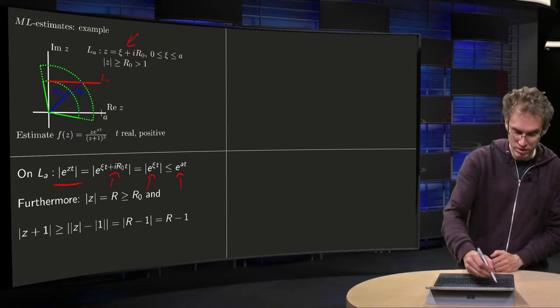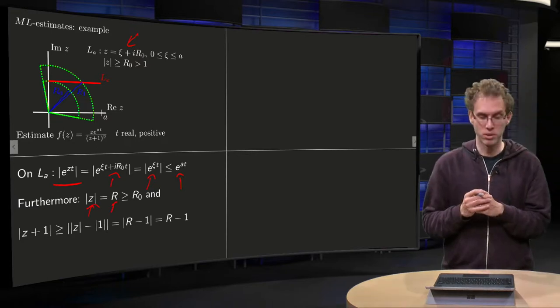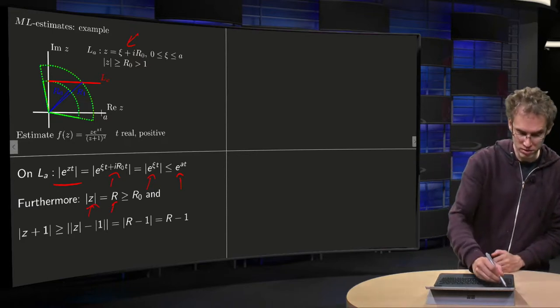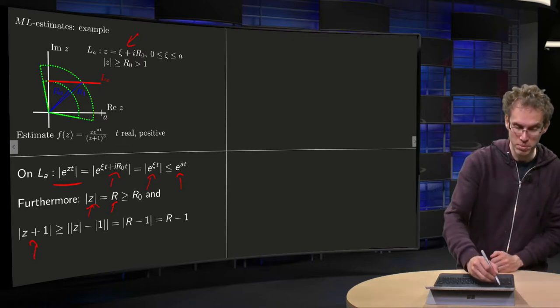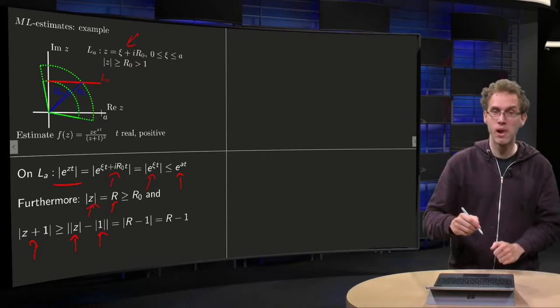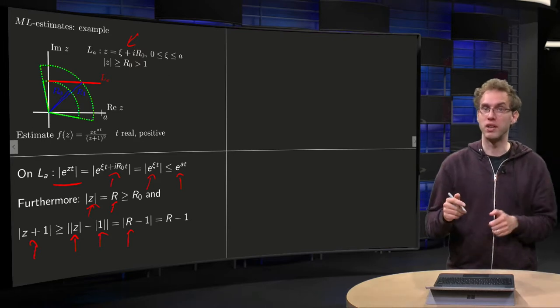Furthermore, we know if the modulus of z equals R, where R is bigger or equal than some R0, then the modulus of z+1, by the triangle inequality, is bigger or equal than the modulus of z minus modulus of 1 in absolute value, which equals |R-1|, and because R is bigger than 1, we get R-1.